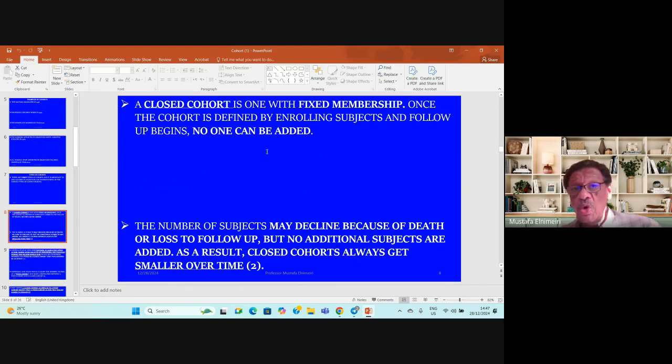A closed cohort is one with fixed membership. Once the cohort is defined by enrolling subjects and follow-up begins, no one can be added. The number of subjects in closed cohort may decline due to deaths or loss of follow-up, but no additional members are added.